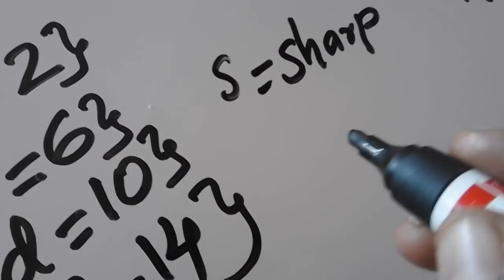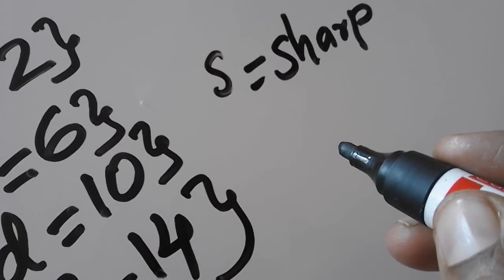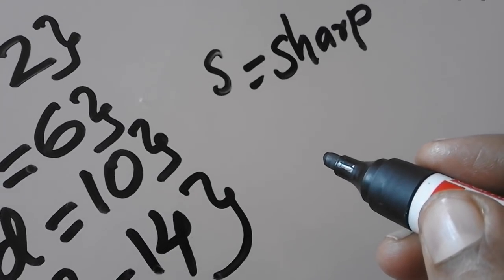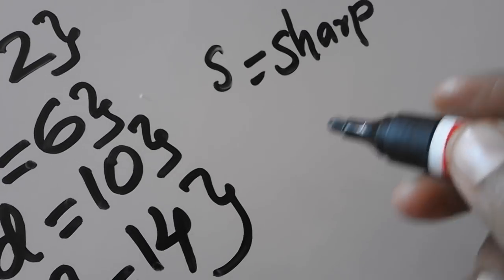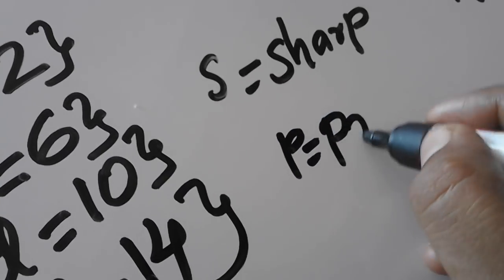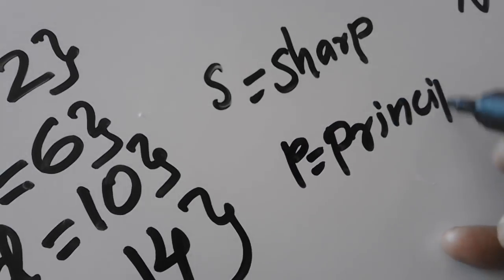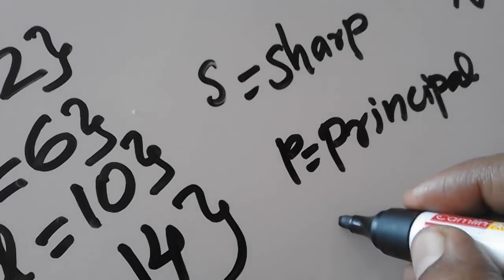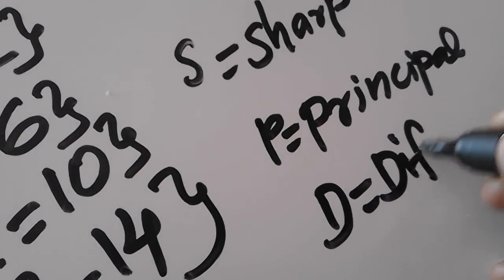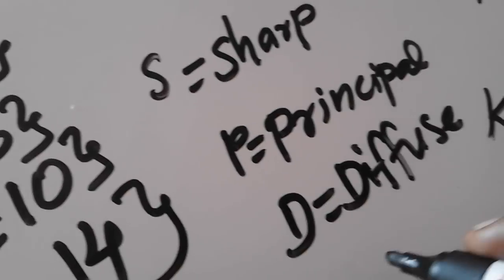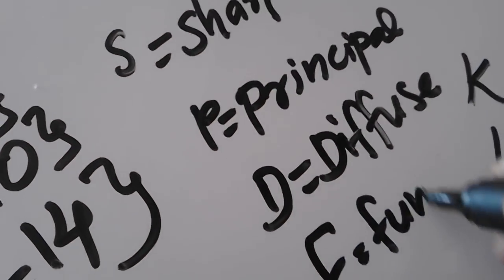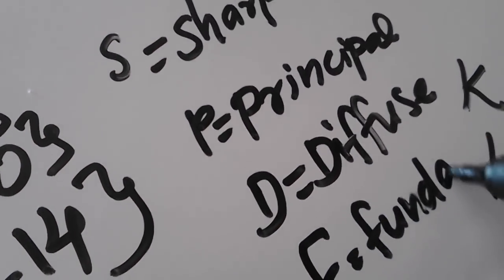Sharp is called S. P stands for Principal — this is the primary one. D is the Diffuse. This is a short form for S, P, D, F.